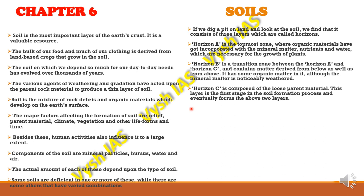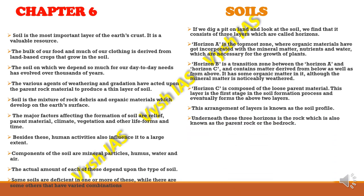Horizon B has some amount of organic content, but the mineral matter sometimes gets weathered or displaced by agents like wind and water. Horizon C is composed of loose parent material and represents the first stage in the soil formation process. This arrangement of layers is known as the soil profile. Underneath these three horizons, we find the bedrock or parent rock — the hard land below the soil.